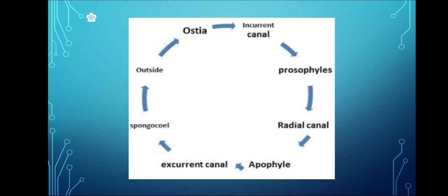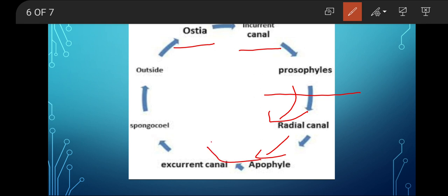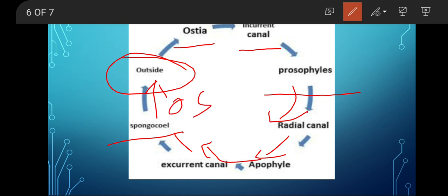Now I will explain with the help of this diagram. As you can see, here is the Ostia present. Water enters at the Ostia, then goes to the Prosopile, then into the Radial Canal, then through the Apopyle, then into the Excurrent Canal, then the middle part of the body — the Spongocoel. The water goes out slowly through the Osculum. The extra water goes out to the outside with the help of the Osculum.